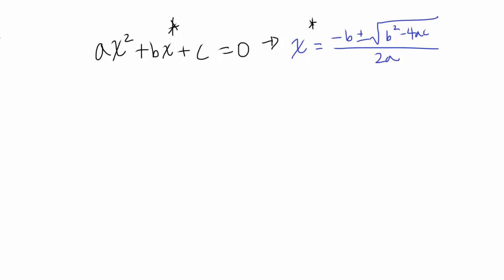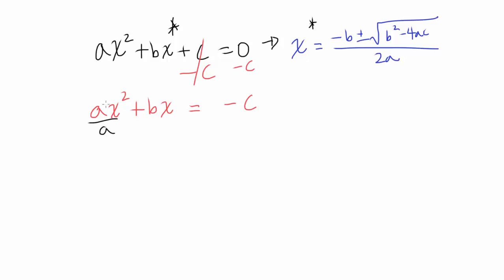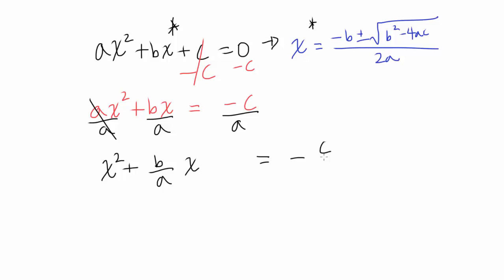We are going to start by moving the c over to the other side, otherwise known as subtracting c, so c cancels out. You have ax squared plus bx is equal to negative c. Now, let's divide by a to make the coefficient of x squared 1, which is usually easier to work with. So dividing everything by a, you have x squared plus b over a times x is equal to negative c over a.